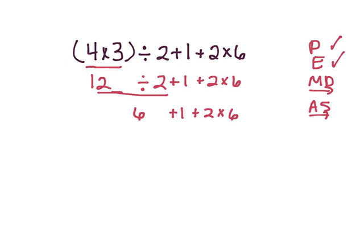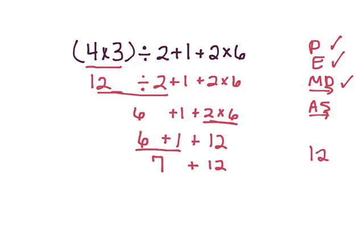Is there any more multiplication or division? Yes — 2 times 6. What is 2 times 6? 12. Now I copy everything just like it was: 6 plus 1 plus 12. Is there any other multiplication or division left? No. Now I'm on addition and subtraction — there's just addition. We're going to show every step. First is 6 plus 1 because that's first — that's 7 plus 12. Now 7 plus 12 is 19. So my answer is 19.